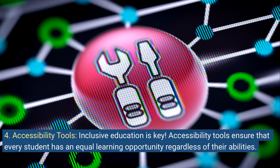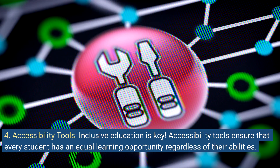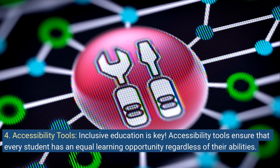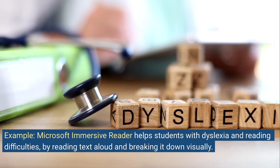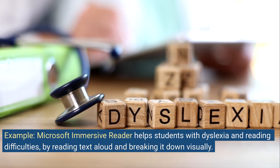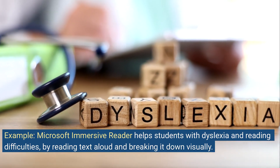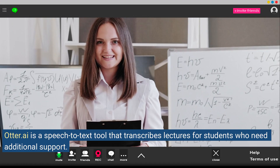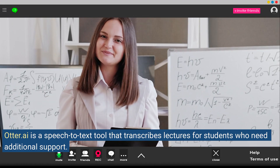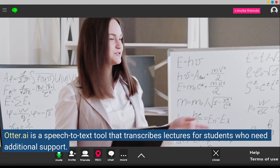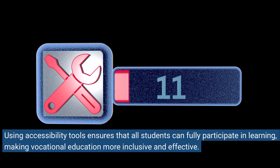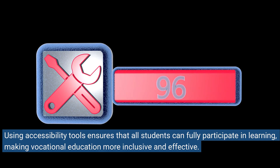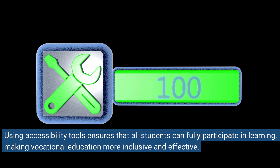Four: Accessibility Tools. Inclusive education is key. Accessibility tools ensure that every student has an equal learning opportunity, regardless of their abilities. Microsoft Immersive Reader helps students with dyslexia and reading difficulties by reading text aloud and breaking it down visually. Otter.ai is a speech-to-text tool that transcribes lectures for students who need additional support. Using accessibility tools ensures that all students can fully participate in learning, making vocational education more inclusive and effective.